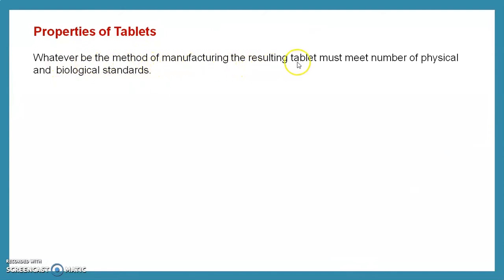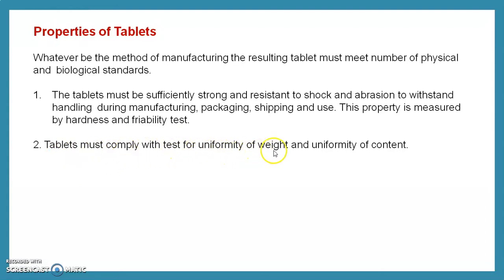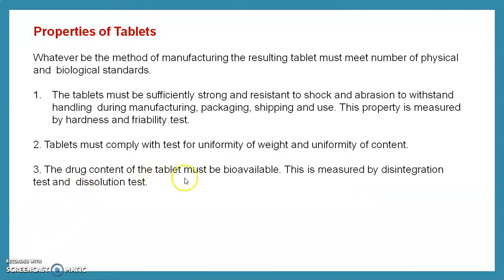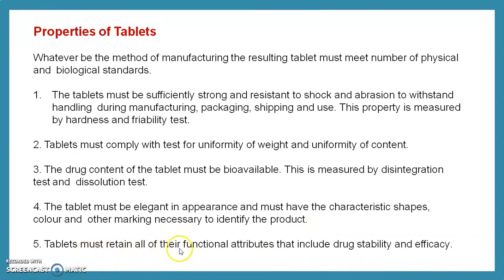Whatever the method of manufacturing, the resulting tablet must meet a number of physical and biological standards. The tablet must be sufficiently strong and resistant to shock and abrasion to withstand handling during manufacturing, packaging, shipping, and use — measured by hardness and friability tests. The tablet must comply with tests for uniformity of weight and uniformity of content. Drug content must be bioavailable, measured by disintegration and dissolution tests. The tablet must be elegant in appearance with characteristic shape, colors, and markings to identify the product. The tablet must also retain all functional attributes including drug stability and efficacy.